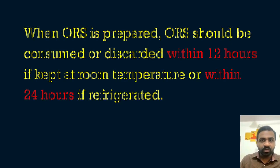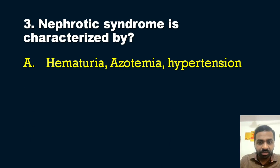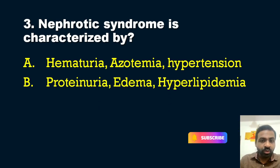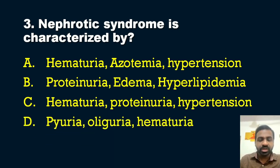Moving to the third question from the renal system — a very important question. Nephrotic syndrome is characterized by which of the following? Options: A — hematuria, azotemia, hypertension; B — proteinuria, edema, and hyperlipidemia; C — hematuria, proteinuria, hypertension; D — pyuria, oliguria, hematuria.